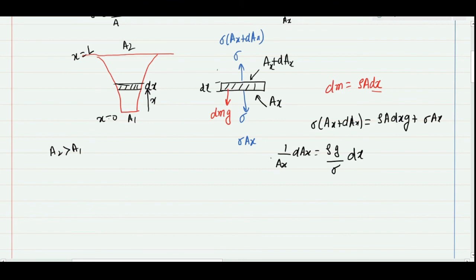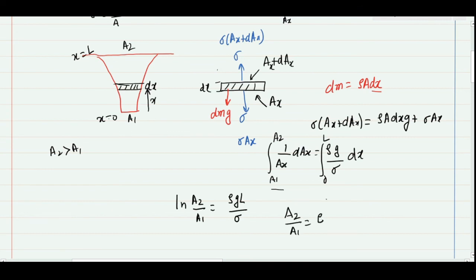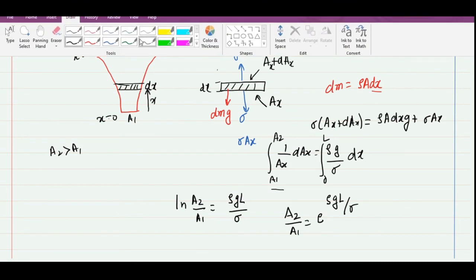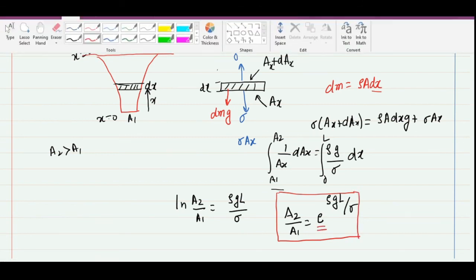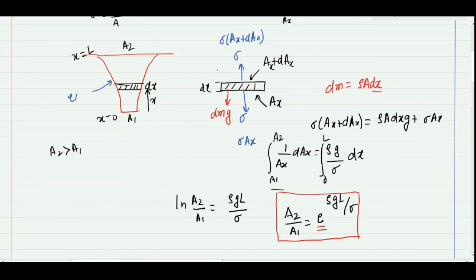Integrating both sides — left side from A1 to A2, right side from 0 to L — we get: ln(A2/A1) = ρgL/σ. Taking the antilog, the final formula is A2/A1 = e^(ρgL/σ). This is the key formula to remember for exams. It shows that the cross-section variation for a bar of uniform strength follows an exponential curve.